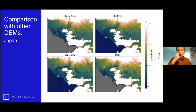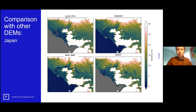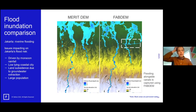We also do a quick informal comparison against the ALOS AW3D30 in Japan: top left is LiDAR, top right is FAB DEM, then ALOS and MERIT. We didn't formally include ALOS in the paper because generally that DEM does not perform well globally, but anyone interested in doing a more formal comparison would be very welcome.